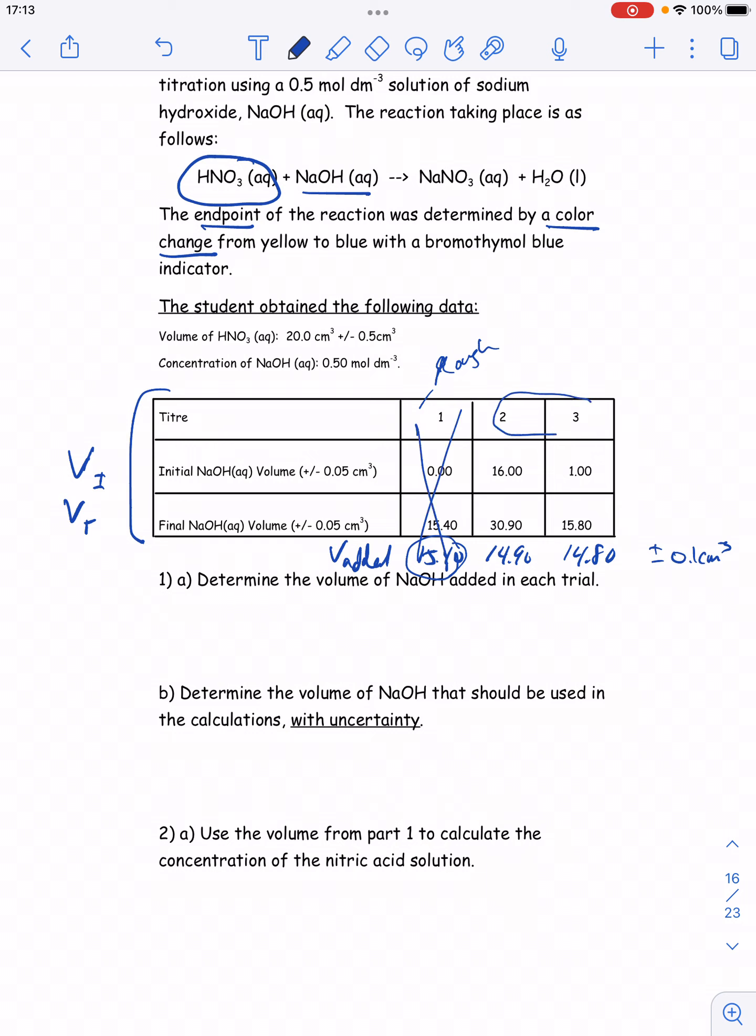What I will use is trial two and three, and I'll average those. So I've just done question A, determine the volume of NaOH added in each. And then part B is what volume should I actually use in my calculations? Well, I would average trials two and three, which gets me 14.85 cm cubed.